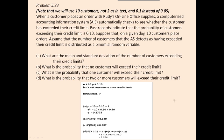Problem 5.23. When a customer places an order, the computerized accounting information system automatically checks to see whether the customer has exceeded their credit limit. Past records indicate that the probability of customers exceeding their credit limit is 0.1.